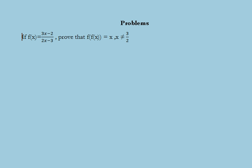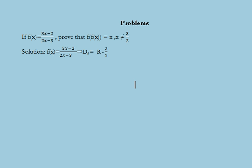Now we discuss a problem based on these concepts. The problem states: if f(x) = (3x - 2)/(2x - 3), prove that f(f(x)) = x, where x ≠ 3/2. As given, f(x) = (3x - 2)/(2x - 3), so the domain of f is ℝ \ {3/2}. We compute f(f(x)) = f((3x - 2)/(2x - 3)).